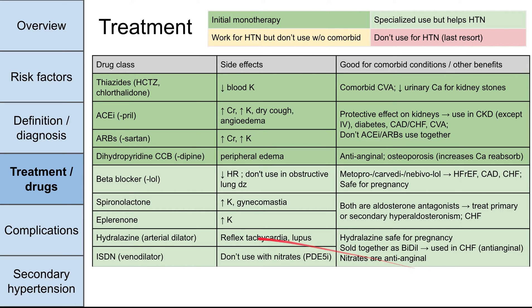Hydralazine causes reflex tachycardia and has been shown to cause drug-induced lupus. ISDN is isosorbide dinitrate — you don't want to use it with other nitrates, such as Viagra.